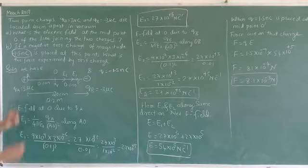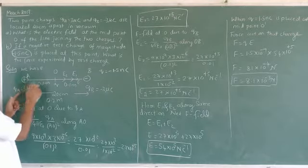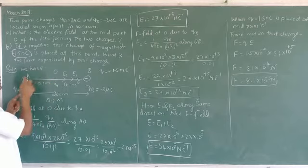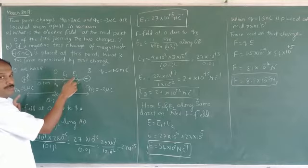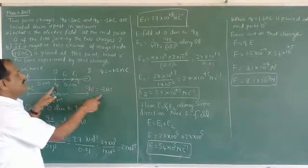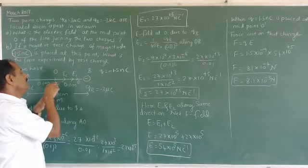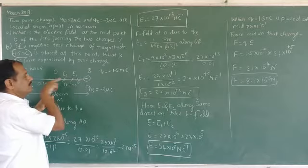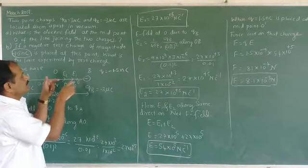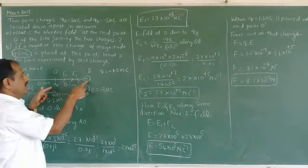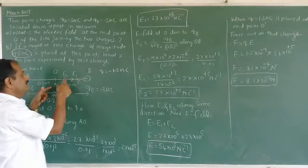This is a positive charge. The electric field at the midpoint O, due to this positive charge, is directed away from the charge — that is E1. Now, the negative charge is placed at B. The electric field at point O due to the negative charge is directed towards the charge — that is E2. So E1 is away from A, but E2 is towards B.